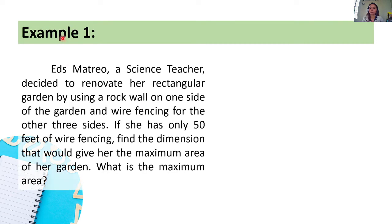Let's look at the first example. Eds Matreyo, a science teacher, decided to renovate her rectangular garden by using a rock wall on one side of the garden and wire fencing for the other three sides. If she has only 50 feet of wire fencing, find the dimension that would give her the maximum area of her garden. What is the maximum area?